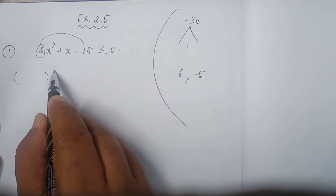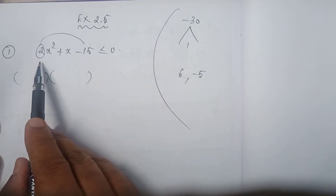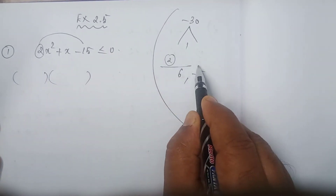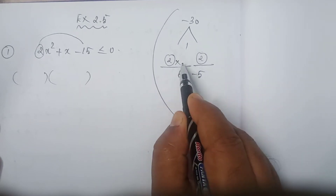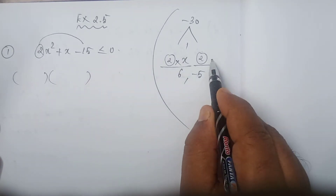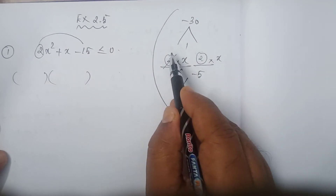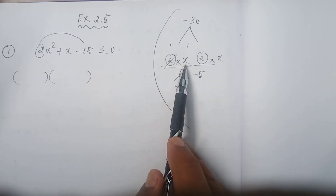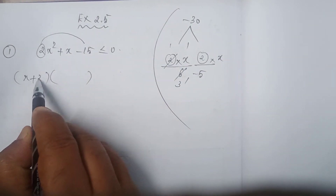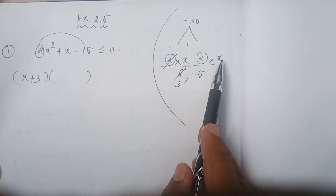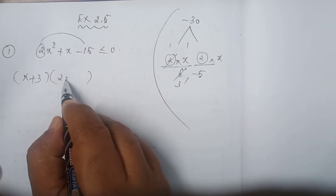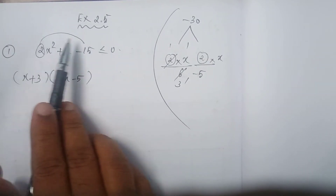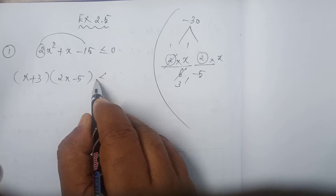For getting the factors, consider the coefficient of x squared, that is 2, written in the numerator of each number. 2 into the variable x into x. We can simplify to get the factors: 1 into x plus 3, and 2x minus 5. If you multiply these two factors, you will get this quadratic expression less than or equal to 0.